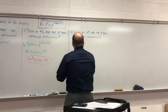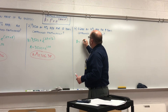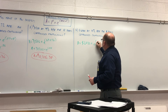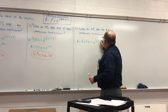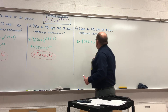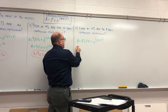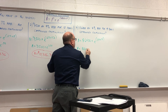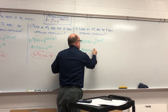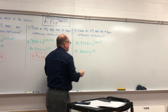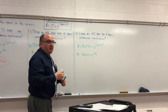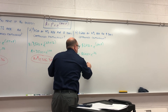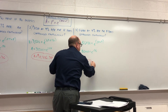One more example. A equals 6,400 times E to the 0.04 times 9. 0.04 times 9 is 0.36, so I'm going to do 6,400 times E to the 0.36, and you get 9,173.31.